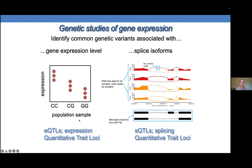If there is a correlation between allelic state at a variant and expression level, you can call that an expression quantitative trait locus. You can do a similar thing for splice quantitative traits, looking for a correlation between allelic state at a variant and the ratio of splice isoforms. We did both of these. Rather than using autopsy samples, we became aware that Dean Bok had quite a collection of human fetal RPE cells and approached him to collaborate.